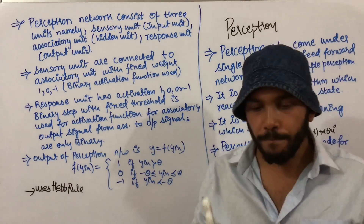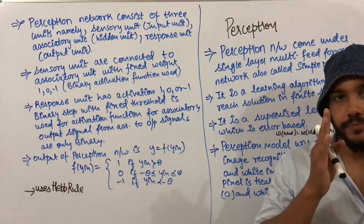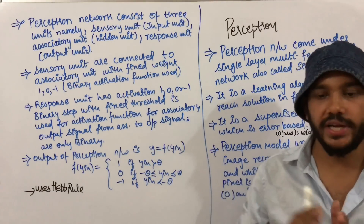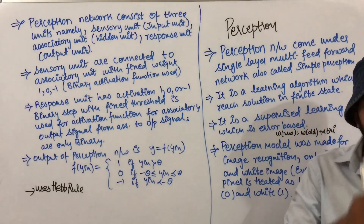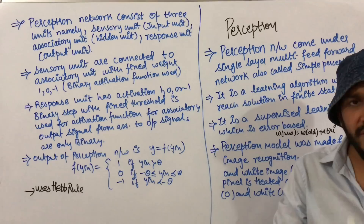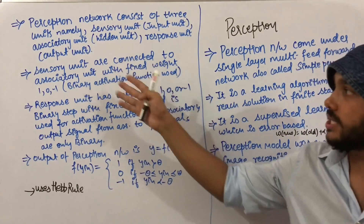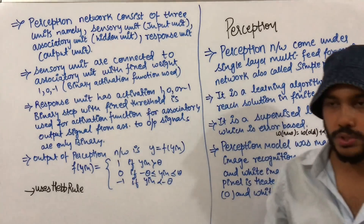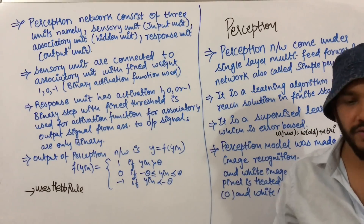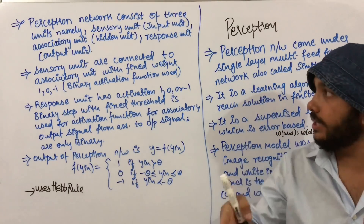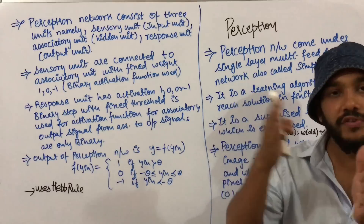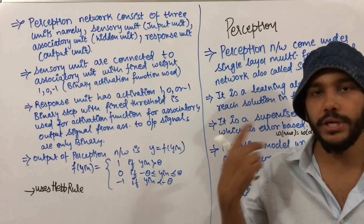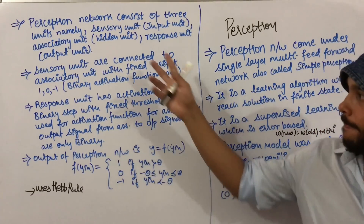The sensory unit and the associatory unit are connected to each other with fixed weights — meaning the weight of the sensory unit and the associatory unit remain the same. Binary activation functions are used between the sensory unit and the associatory unit, so the output is in only two formats: zero or one.